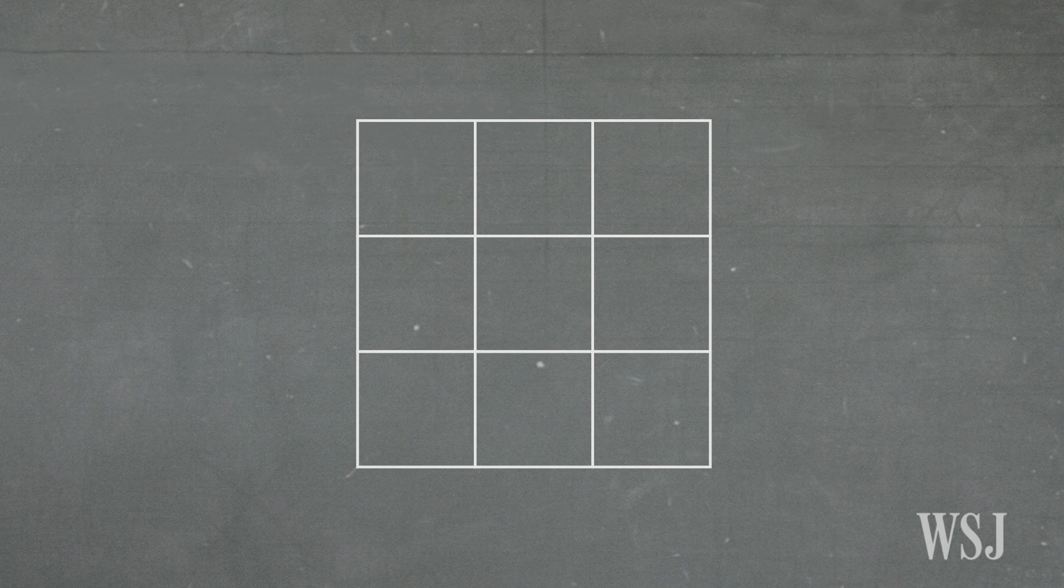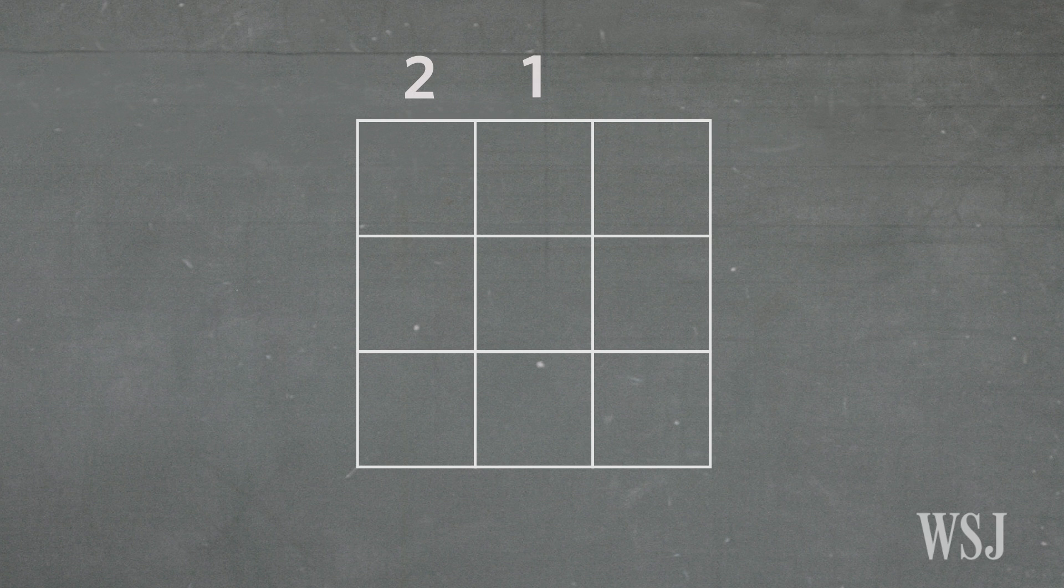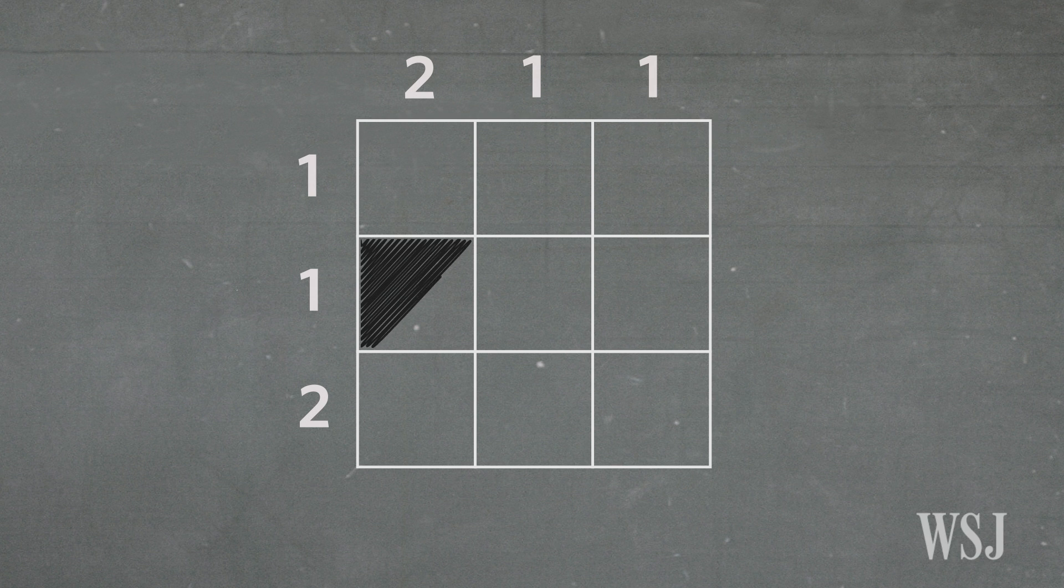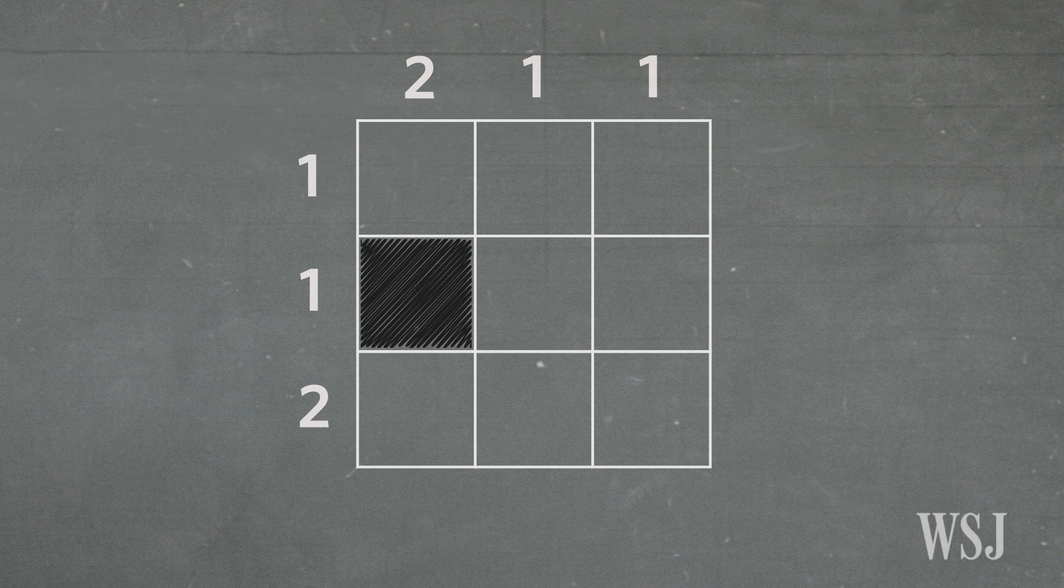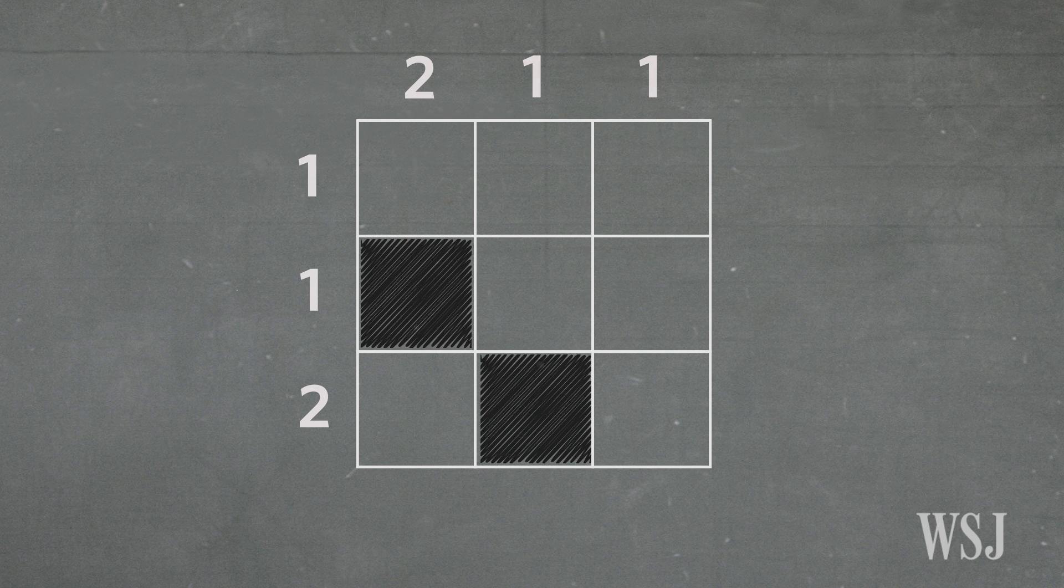What if we get rid of that symmetry and we try, say, two one one along the top and one one two down here? Well let's try to solve it. To satisfy this two in this column we would have to color in the center just to be able to get two next to each other. And similarly in this row we'd have to fill in the middle to be able to get two in a row here.